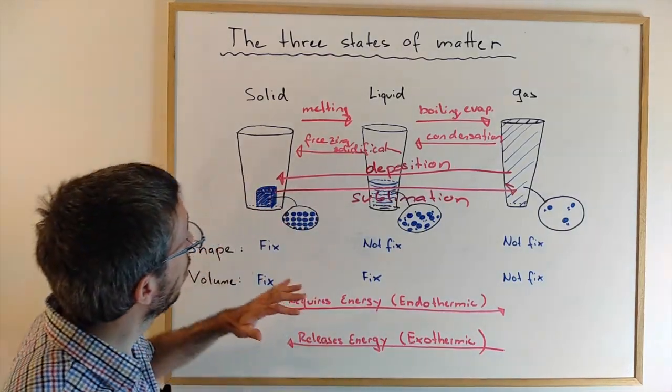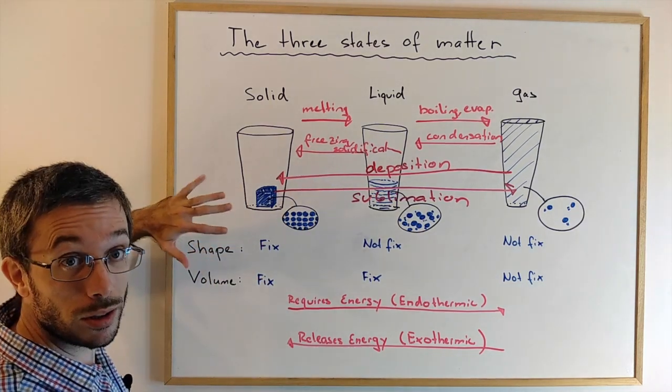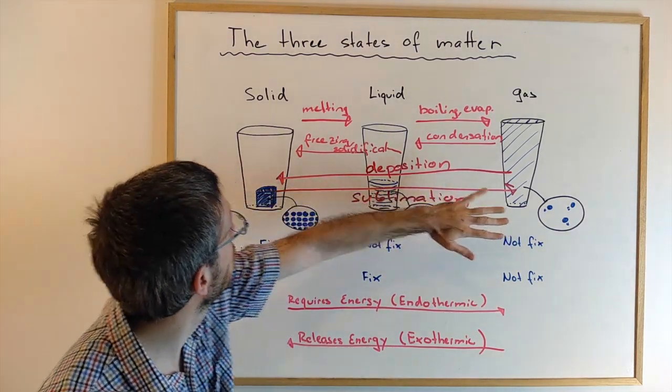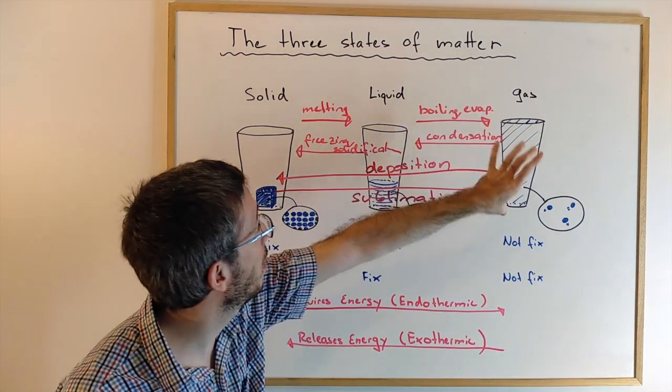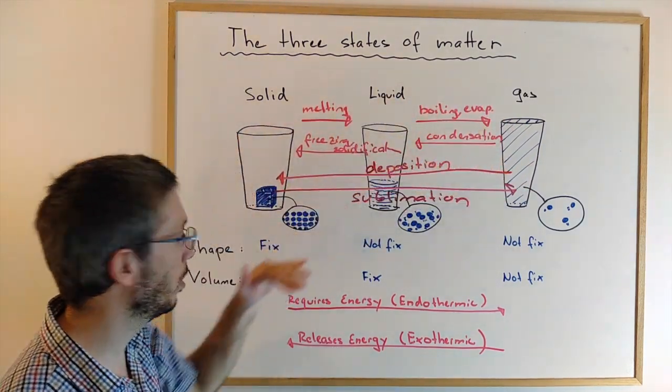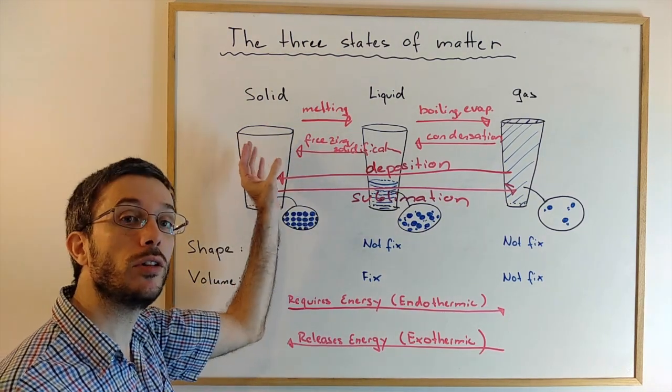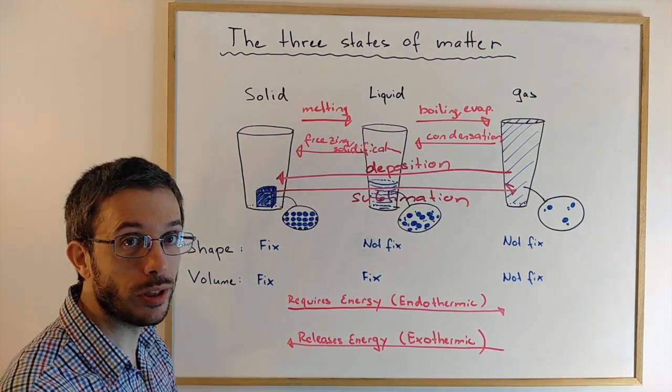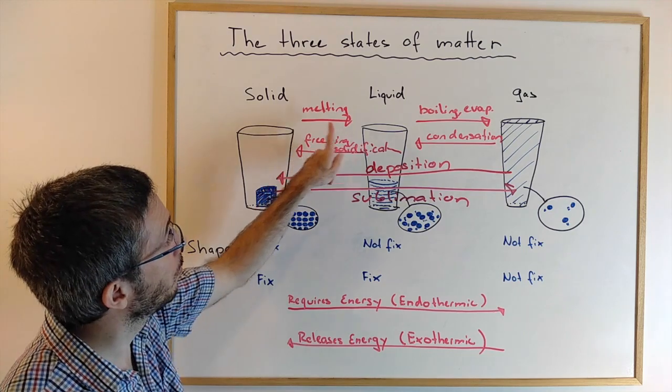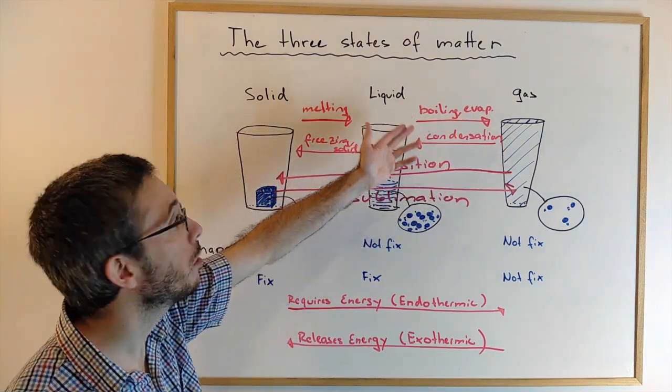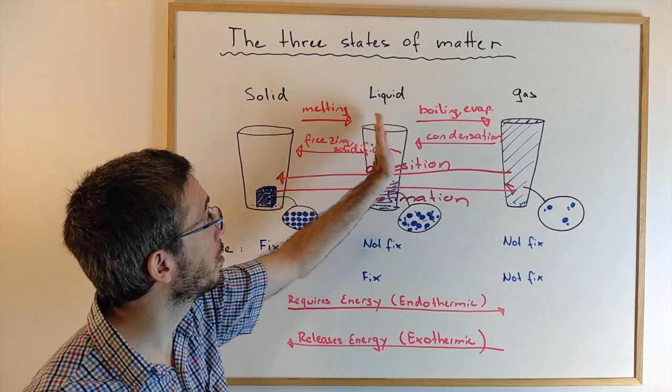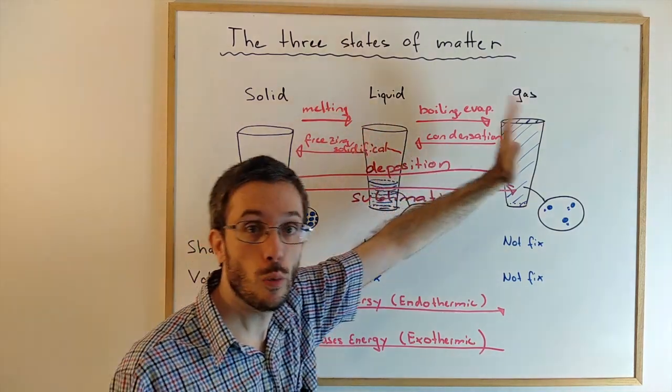Now what's interesting is that all the changes that go in that direction, so from solid to liquid to gas, or from solid directly to gas, they will require energy. So if you want to melt the solid down, you need to add energy. You need to put it on a hot surface. If you want to go from liquid to gas, same thing. If you're boiling water, you need to add energy to make the liquid water into vapor.